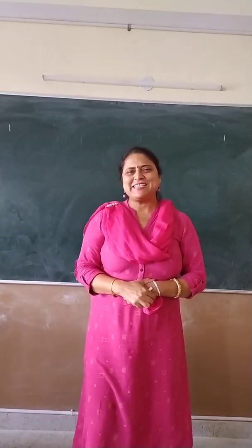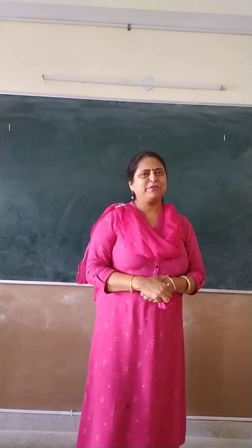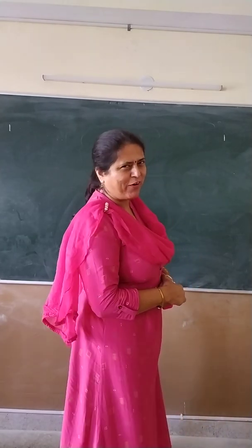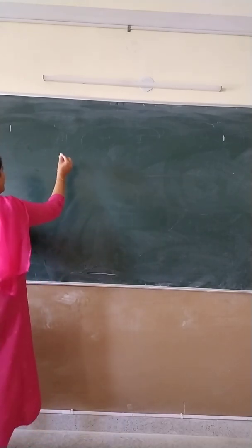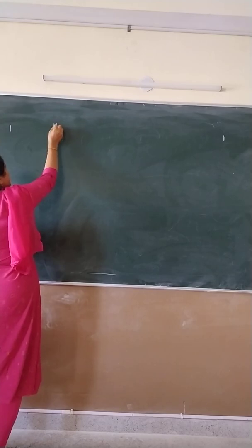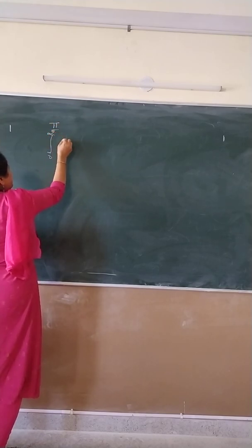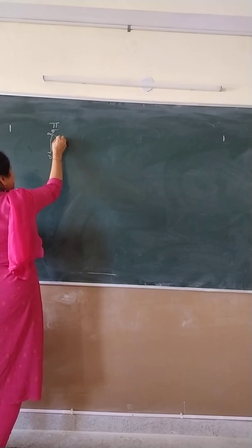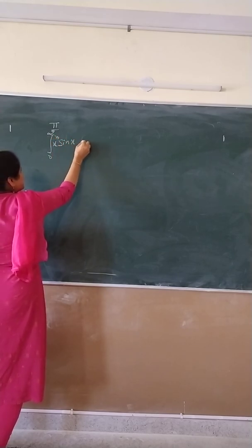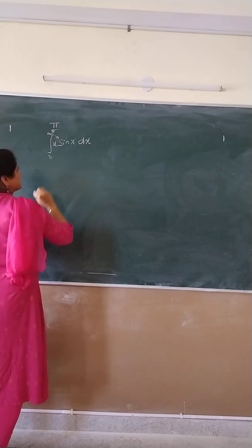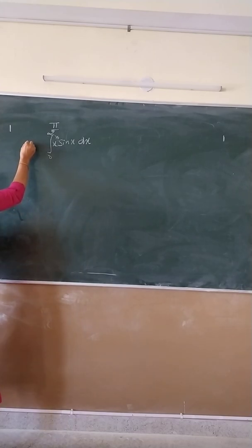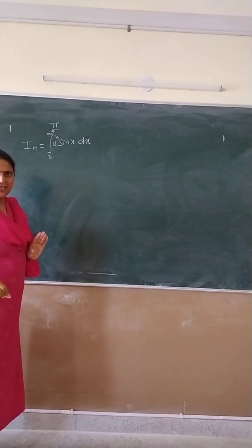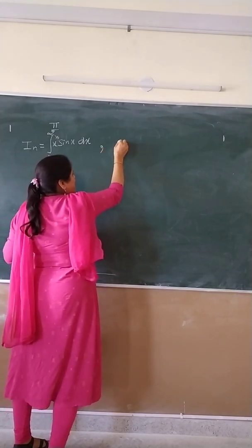Good afternoon dear students. Today we will find the reduction formula for the integration from 0 to π/2 of x raised to power n times sin x dx. You have to find the reduction formula for this. Let this be Iₙ, so Iₙ is equal to this integral, and hence evaluate I₅.